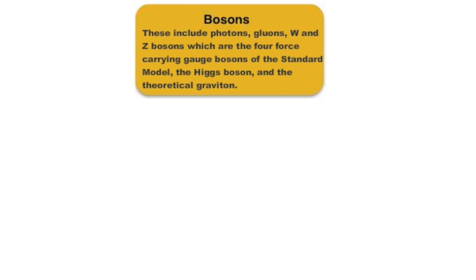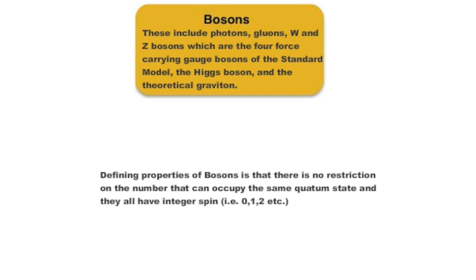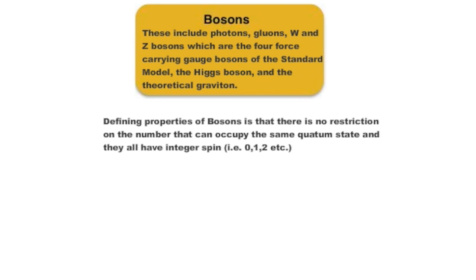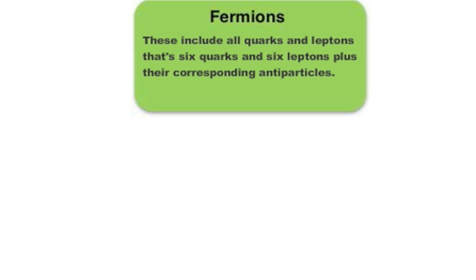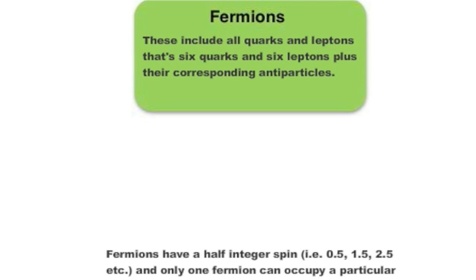Going back to the basic definition of a boson and fermion, remember that the boson has to have an integer spin, whereas the fermion has to have a half integer spin.